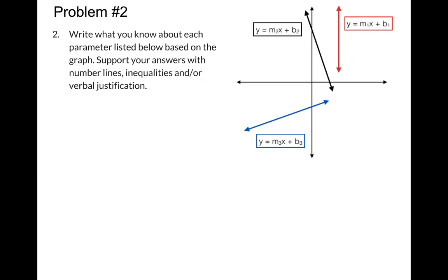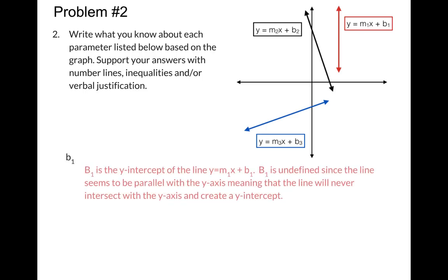Finally, let's look at the b's. So b1 is the y-intercept for that red equation, and it is also undefined. It doesn't exist because the red line is parallel to the y-axis. It will never intersect with the y-axis, and so it will never create a y-intercept.